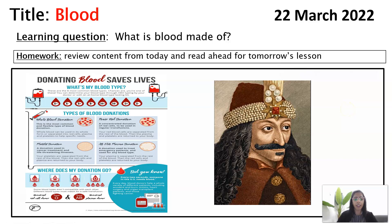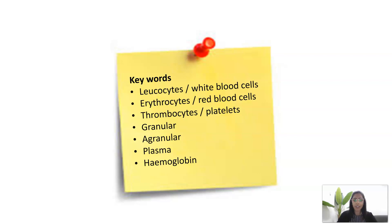Today we're going to be looking at blood, and our main learning question is to discover what blood is made of. As a bit of trivia, this is Vlad the Impaler, or Vlad Draco — a warlord in the 14th century and the basis of Bram Stoker's Dracula character, who famously drank blood.